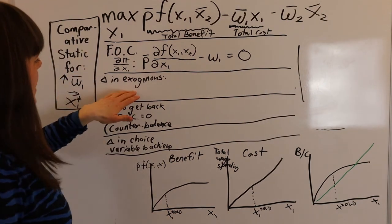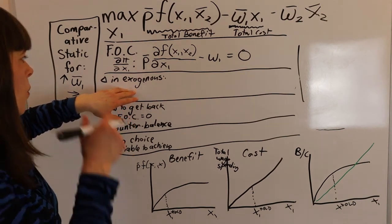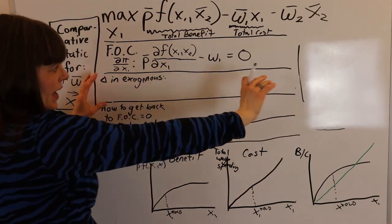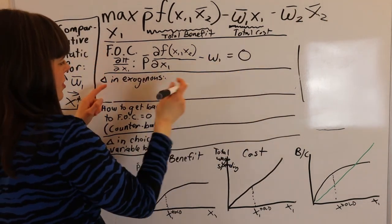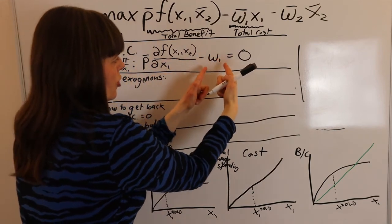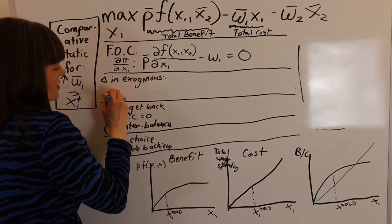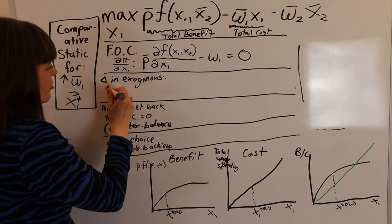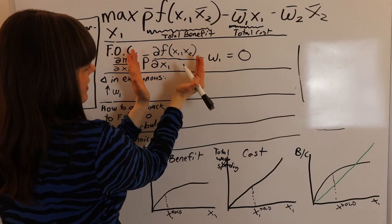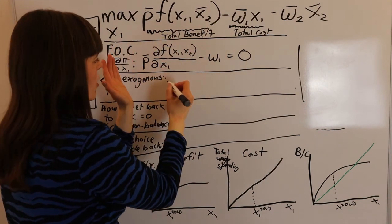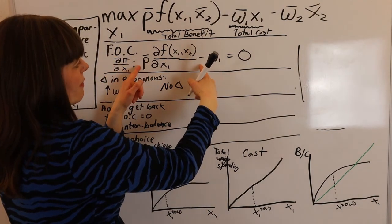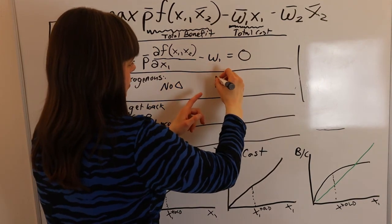Now we want to know what happens when we change our exogenous variable. In the line underneath the first order condition, I'll specify which way we're changing the exogenous variable and how that changes the two terms in our first order condition. Our exogenous variable change is an increase in the wage. When we increase the wage, our first term — the benefit — does not change, because there's no wage in it, so no change. The cost term, of course, is going up as the wage goes up.